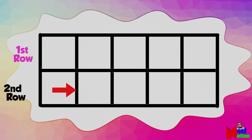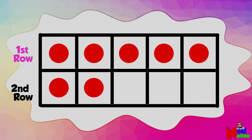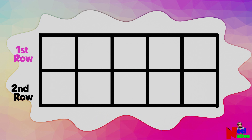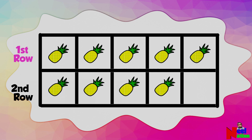This is the first row and this is the second row. You can show numbers on 10 frames by filling each box starting with the first row and then the second row. When both rows are full, you have 10 objects in the 10 frame. You can use any objects that can fit inside the boxes to show numbers on a 10 frame.